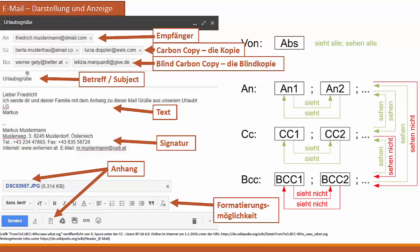Diejenigen, die bei CC angeführt worden sind, sehen nicht, an wen diese Nachricht ebenfalls noch geht. Den Absender sehen alle, die die Nachricht bekommen – also die, die direkt angeschrieben sind, die bei CC stehen, und die bei BCC stehen. Der besondere Vorteil der Blind Carbon Copy ist, dass die BCC-Empfänger gegenseitig nicht sehen, wer diese Nachricht ebenfalls noch erhalten hat.